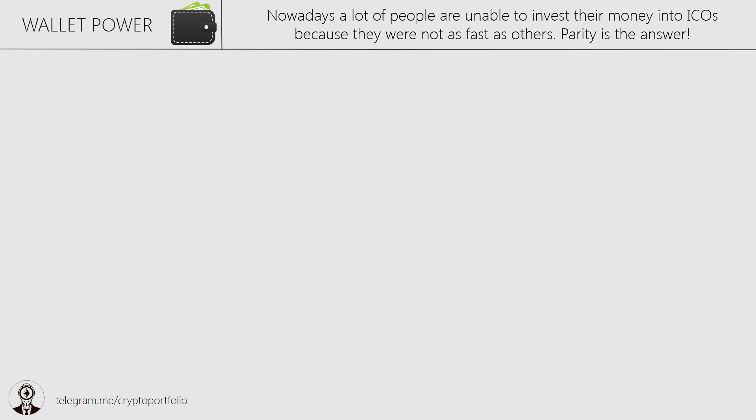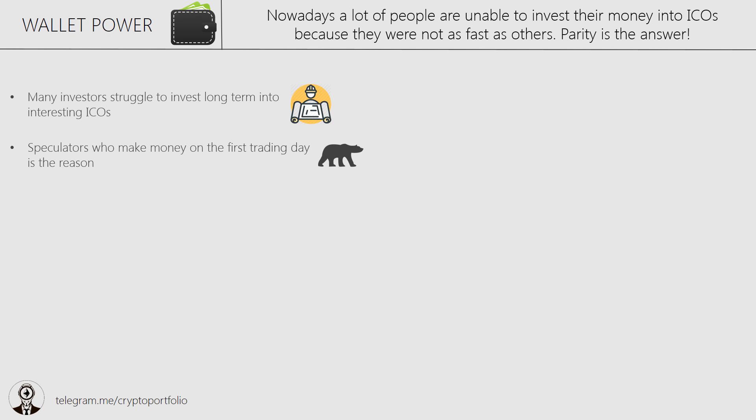Remember not to turn off the Parity Ethereum wallet on your computer during the time of an ICO. A lot of people who want to invest long term are unable to do this — the reason is simple: speculators who want to make a big return on the first day of trading. Parity will help you out with its option to create a timer on transactions, giving you an edge over other investors.